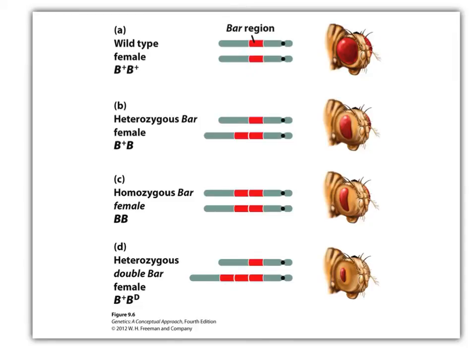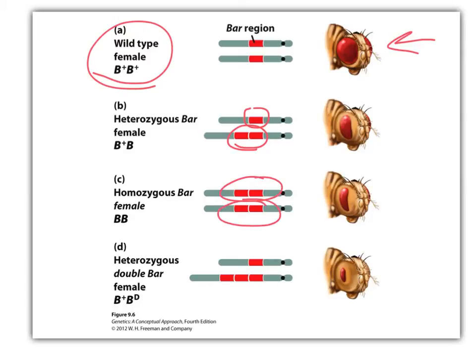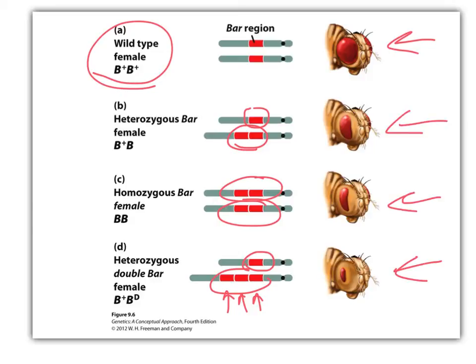An example of some duplications that change phenotype is in the bar region of a Drosophila eyeball. Wild type has both alleles. A heterozygous bar female has too many of this allele — three total. One combination has four total, and another also has four total but there's a complete triplicate. Depending on what their DNA looks like, it totally changes their phenotype.